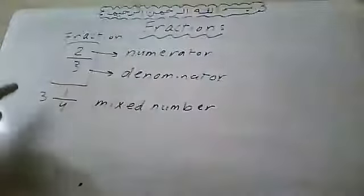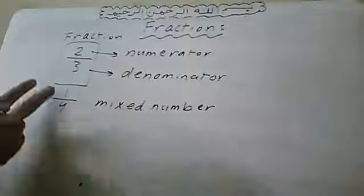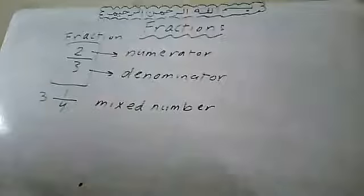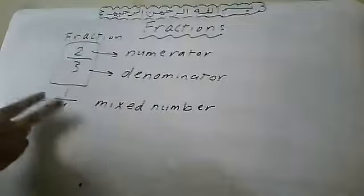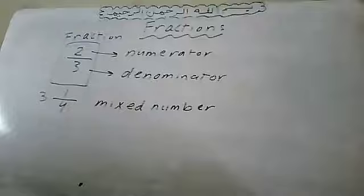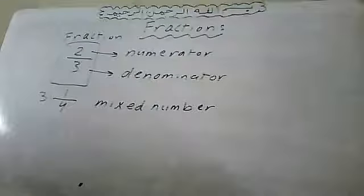Why is it called a mixed number? Because it is formed from a whole number and a fraction. A whole number like three, four, or five, combined with a fraction — that's why it's called a mixed number.